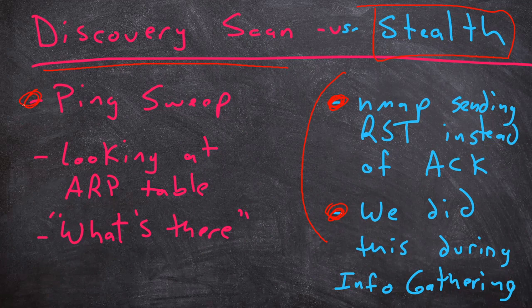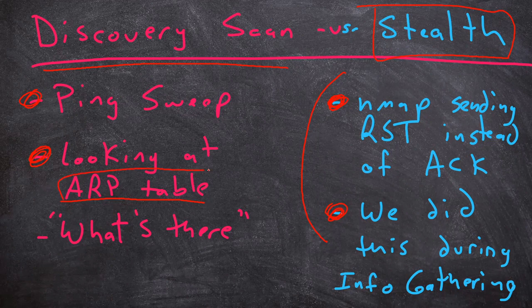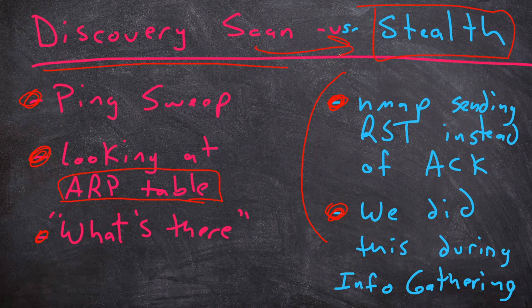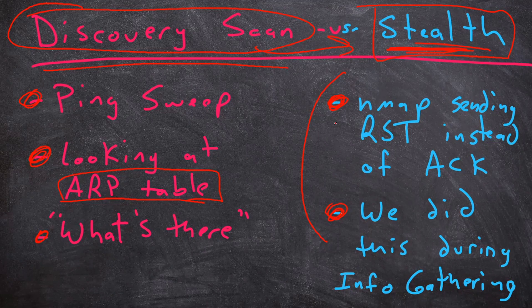With discovery scanning, we might just look at a ping sweep or we might look at a computer's ARP table. If we look at the ARP table, we're going to just see what computers the computer already knows about on the network, and we don't even have to reach out at all — we can just look for what computers it's been talking to. Basically, a discovery scan is just what's there, and that discovery scan could actually be a stealth scan as well. The reason they're separate is because all discovery scans aren't necessarily stealthy, but you can add a layer of stealth using tools like Nmap that will try to hide its scanning on the network.